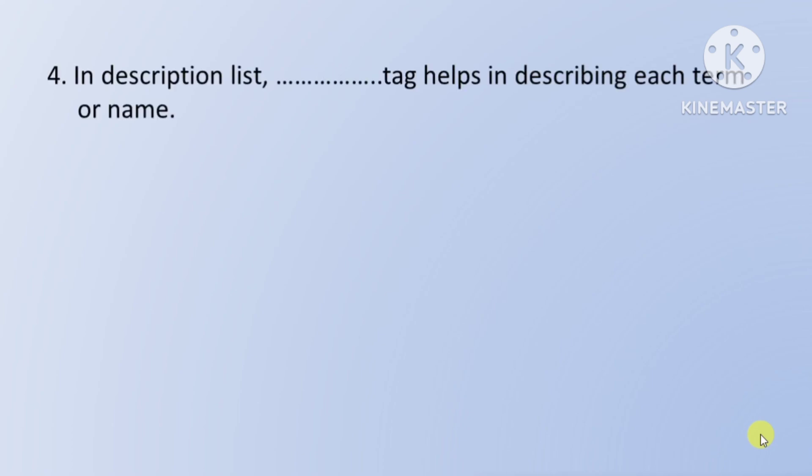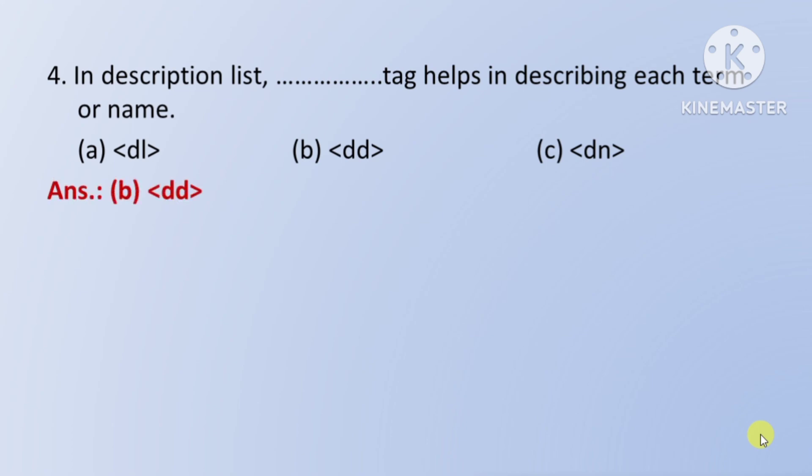Next question: in a description list, which tag helps in describing each term — description list mein kaun sa tag help karta hai pratyek term ko describe karne ke liye. Option A: DL. Option B: DD. Option C: DN. Toh iska right answer hai Option B: DD.